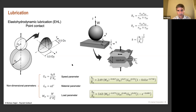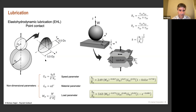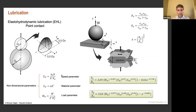The same approach applies to point contact. For point contact, we need the ellipticity of the contact zone — elliptical half axes — and the equivalent radius in the x and y directions. The ratio r_y / r_x is defined as k, the elliptical ratio. Using the same set of non-dimensional parameters, Hamrock proposed two formulas for film thickness calculation in point contact.